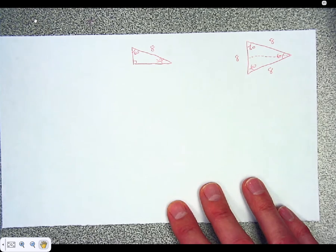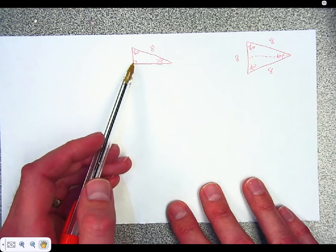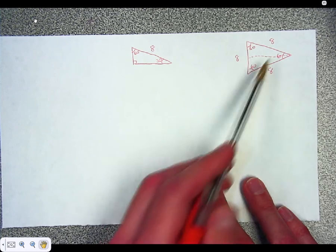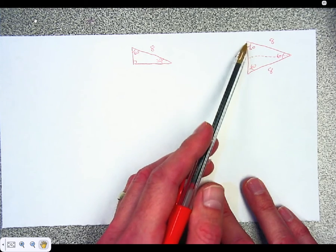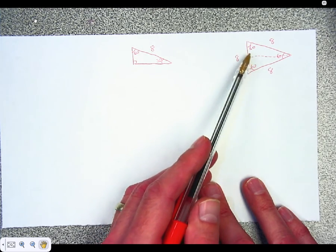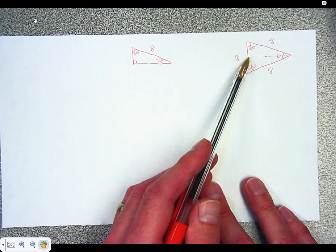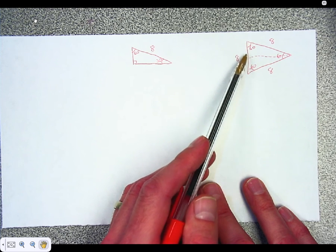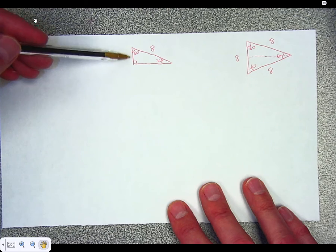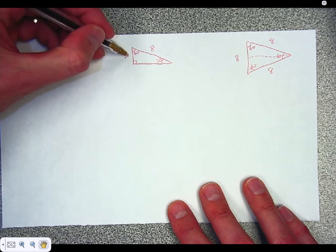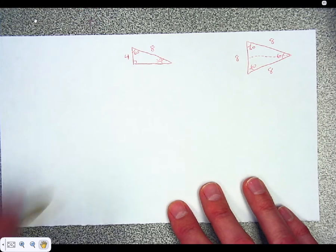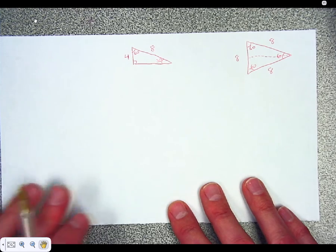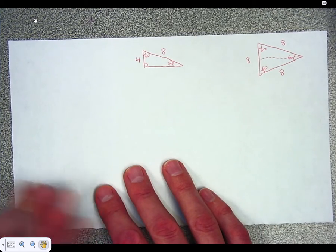So I have what we call a 30-60-90 triangle. Again, this side is still 8. If I cut this side in half, like I did right here, then this part, just the top part that I have over here, must be 4. Because I cut the triangle in half.